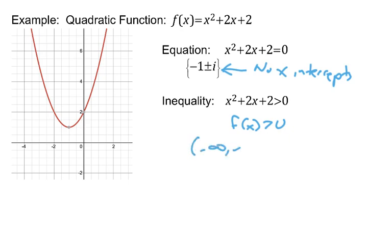So without doing anything with solving the equation or looking at test points, just thinking about the graph, we know the solution of the inequality is negative infinity to infinity. So that's a really nice additional thought.